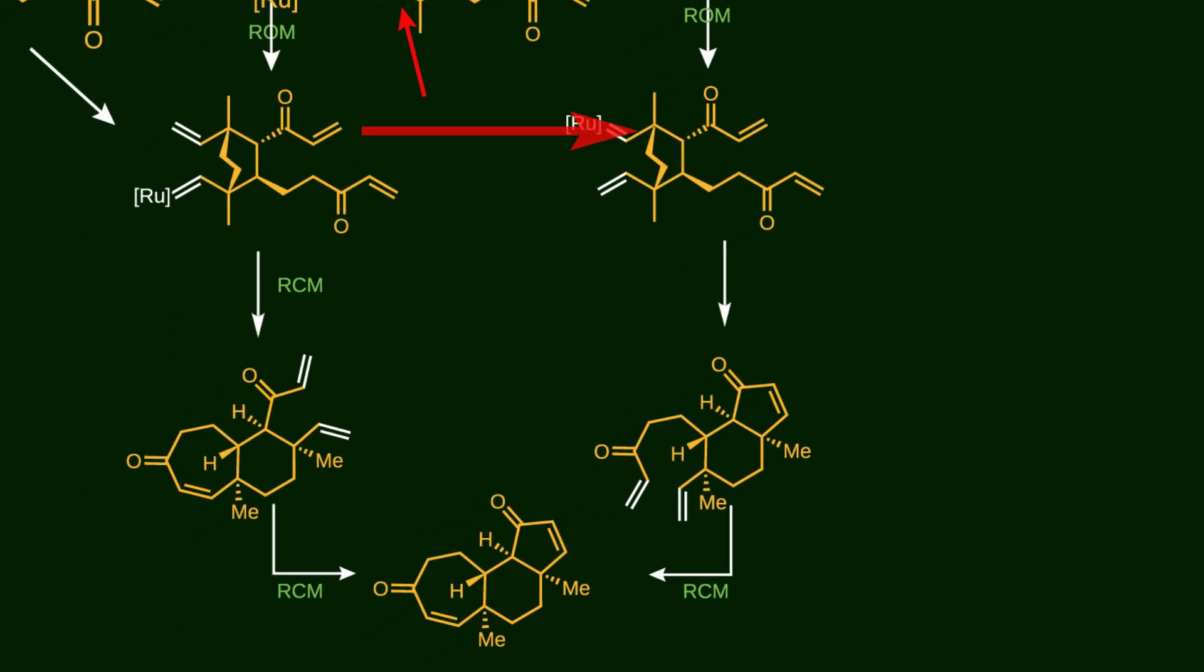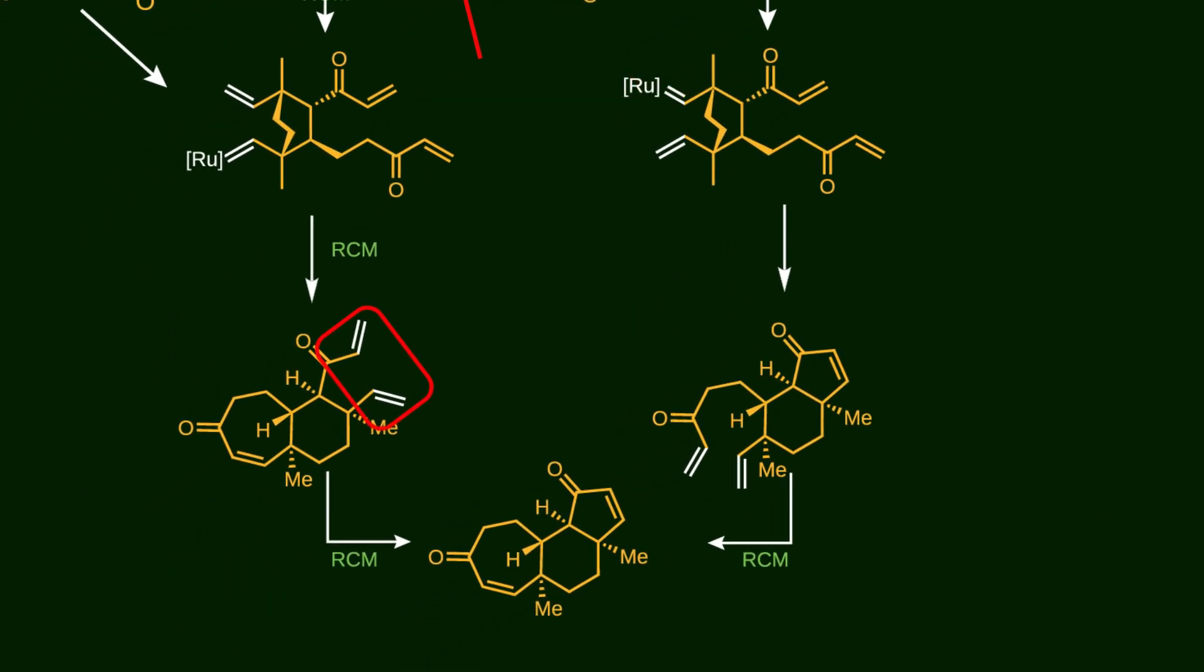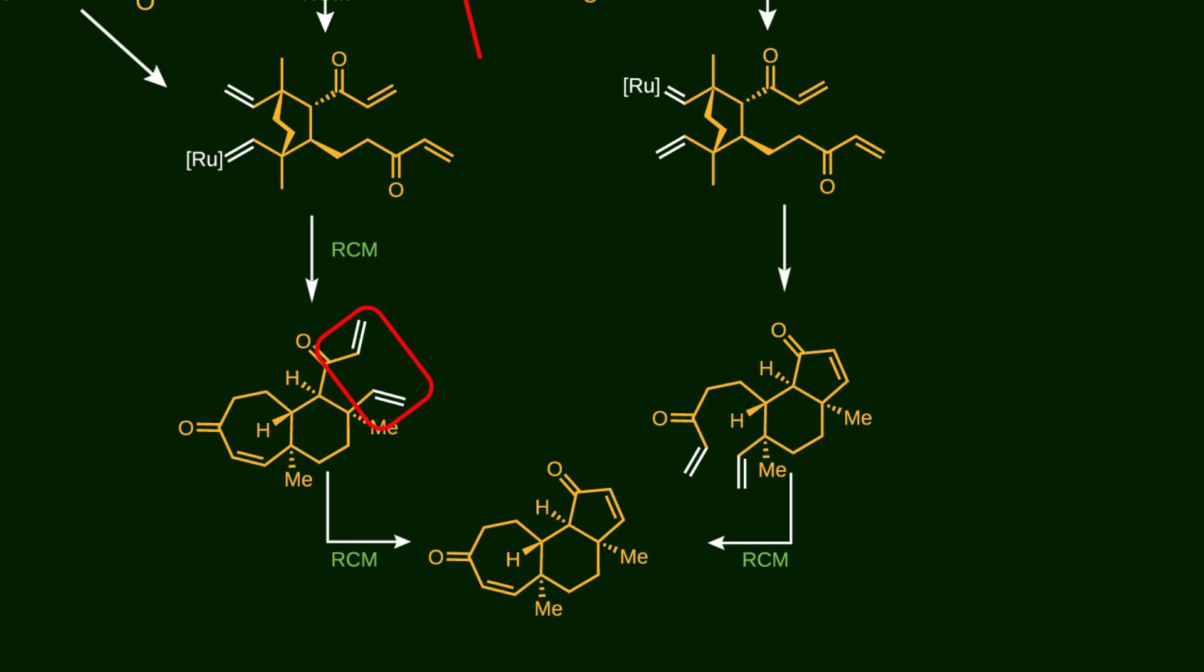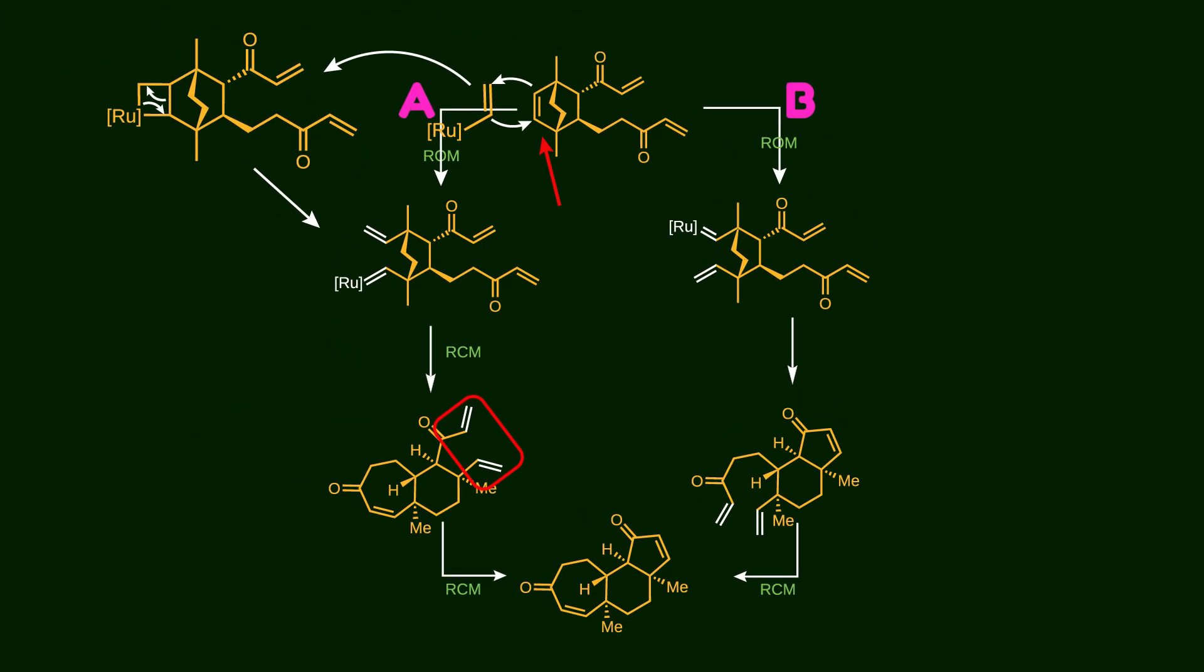After the first ring is closed, the remaining two double bonds are now ready for the second ring-closing metathesis reaction. Treating this intermediate with Grubbs catalyst produces the final fused three-ring system, with all substituents in the correct stereochemistry. It's such a beautiful cascade of alkene metathesis, and it really shows how effective this strategy is.